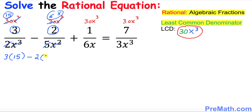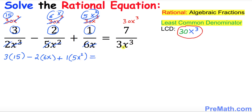For the third term: 6 divides into 30 five times, and x over x cubed simplifies to x squared, giving 1 times 5x squared. For the last term: 3 divides into 30 ten times, and x cubed cancels, giving 7 times 10.